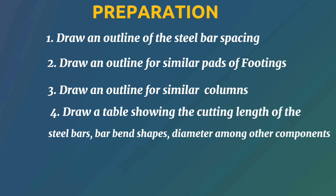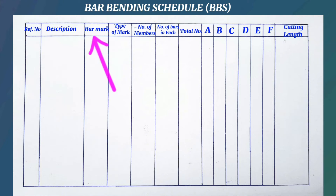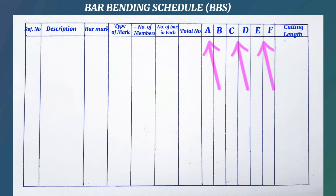The fourth step is to draw a table showing the cutting length of the steel bars, bend shapes, and bar diameter, among other components. This is where we draw the real bar bending schedule. What we did in steps one, two, and three helps us avoid wasting time in step four. This table has the reference number, description, bar mark, type of mark, number of members, number of bars in each, total number of bars, alphabetical letters for sides, and the length of the bar.